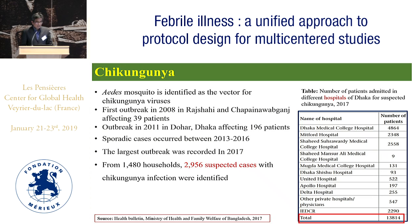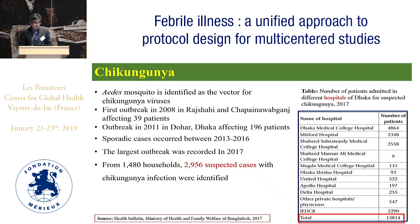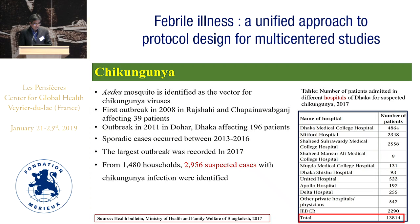Now, chikungunya: Aedes mosquito is the main vector. There were a couple of outbreaks: in 2008, an outbreak in Rajshahi and Chapai Nawabganj districts with 39 affected people, and another in 2011 in Dohar of Dhaka district affecting 196 patients. Sporadic cases occurred between 2013 and 2016. However, the largest outbreak was recorded in 2017 when almost 3,000 suspected chikungunya cases were identified in 1,418 households. More than 13,000 — almost 14,000 — patients were admitted in different hospitals of Dhaka city during the 2017 outbreak.